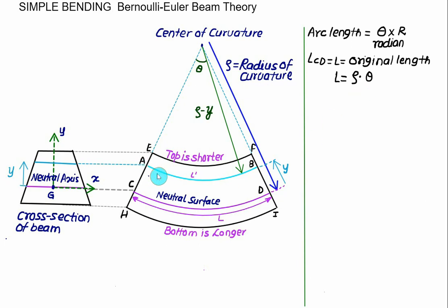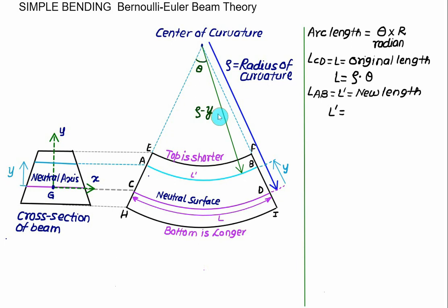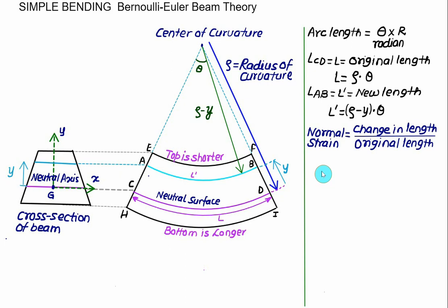So L prime equals rho minus Y times theta. We define normal strain along the X direction as the change in length divided by the original length. Normal strain is represented by epsilon_x. Change in length equals new length minus original length, divided by original length.